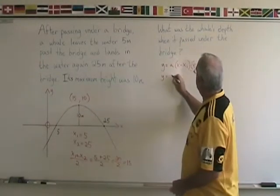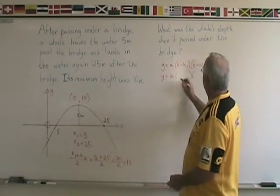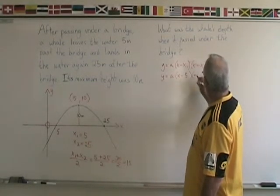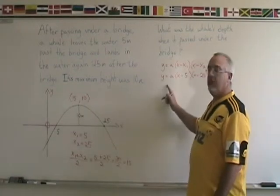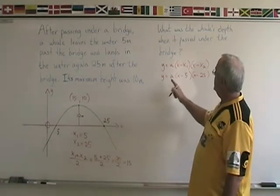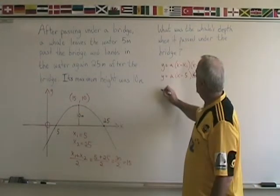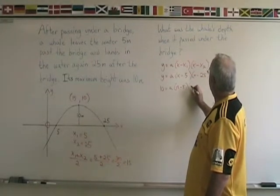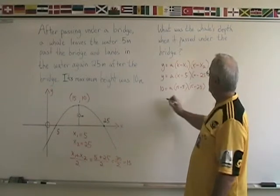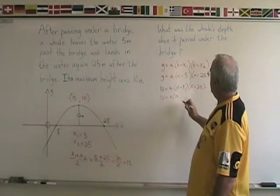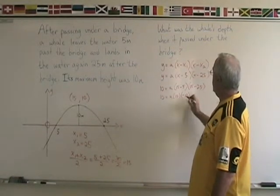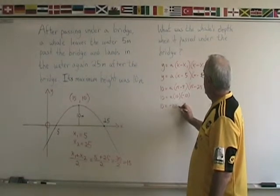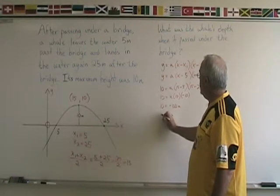We rewrite the equation with x1 equals 5 and x2 equals 25 in place. Then we replace x and y with the coordinates of the vertex point: 10 equals a times (15 minus 5) times (15 minus 25). Simplifying: 15 minus 5 is 10, 15 minus 25 is negative 10, and 10 times negative 10 is negative 100. So we get 10 equals negative 100a. Isolating a, it equals negative 1 tenth.